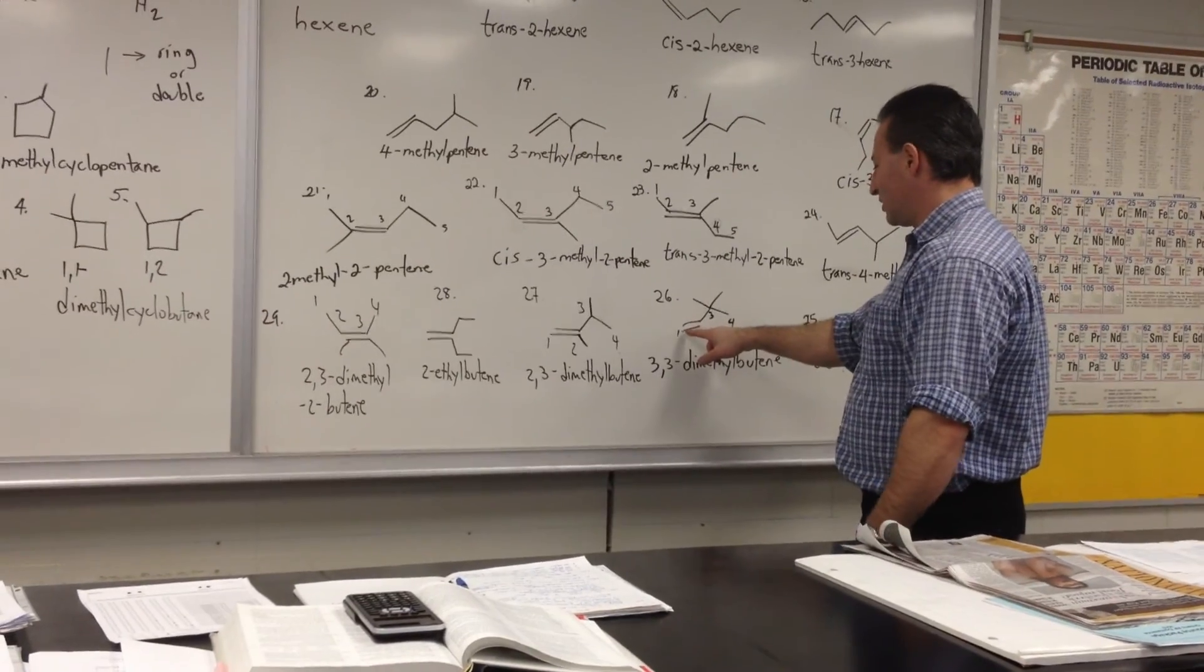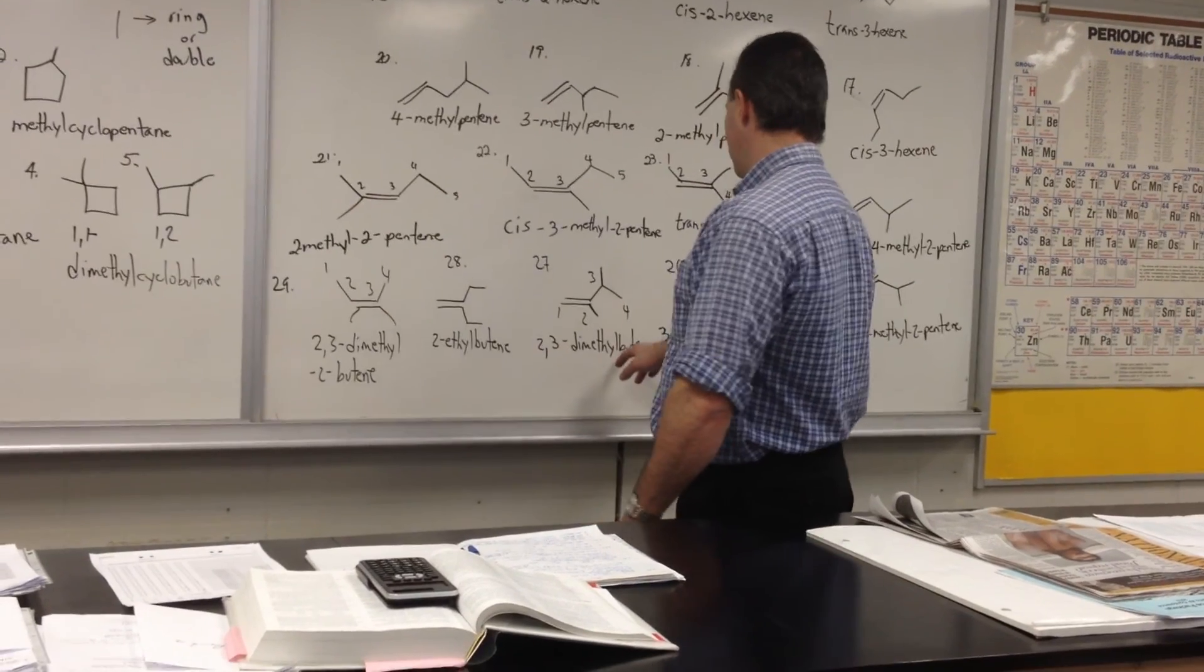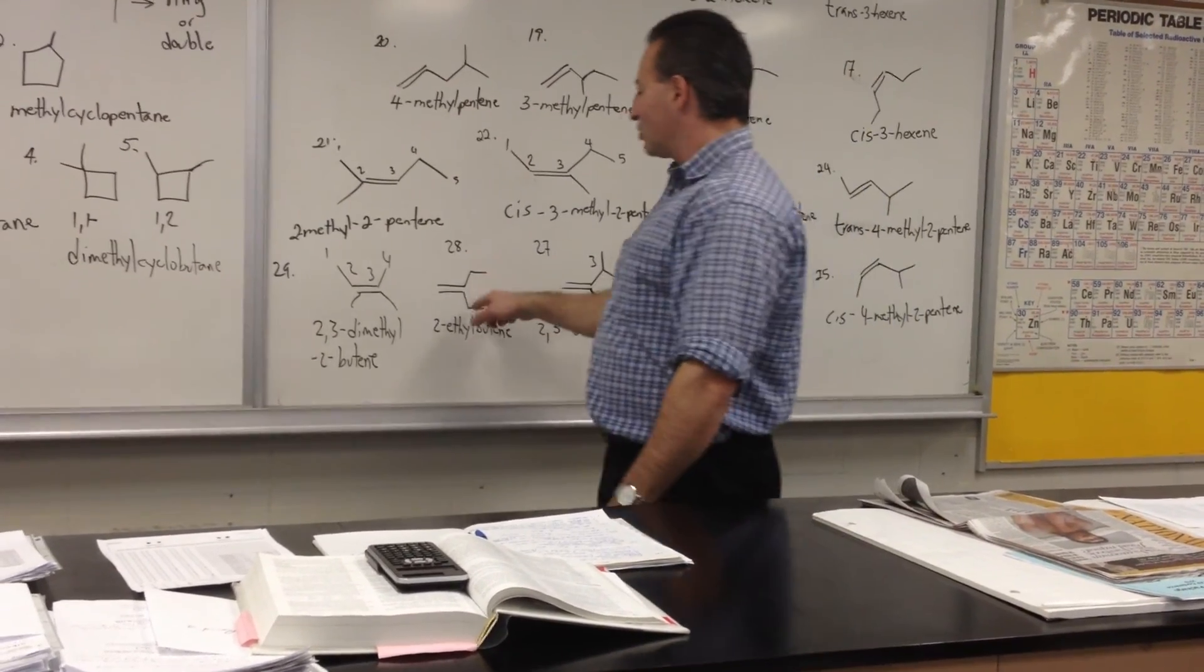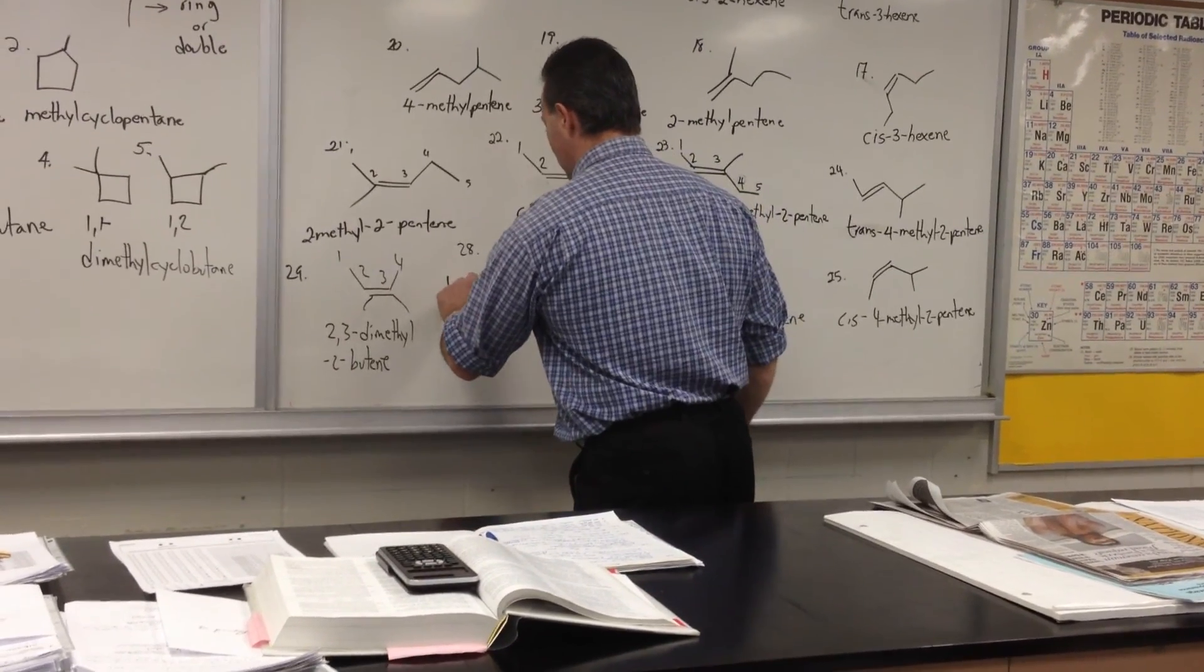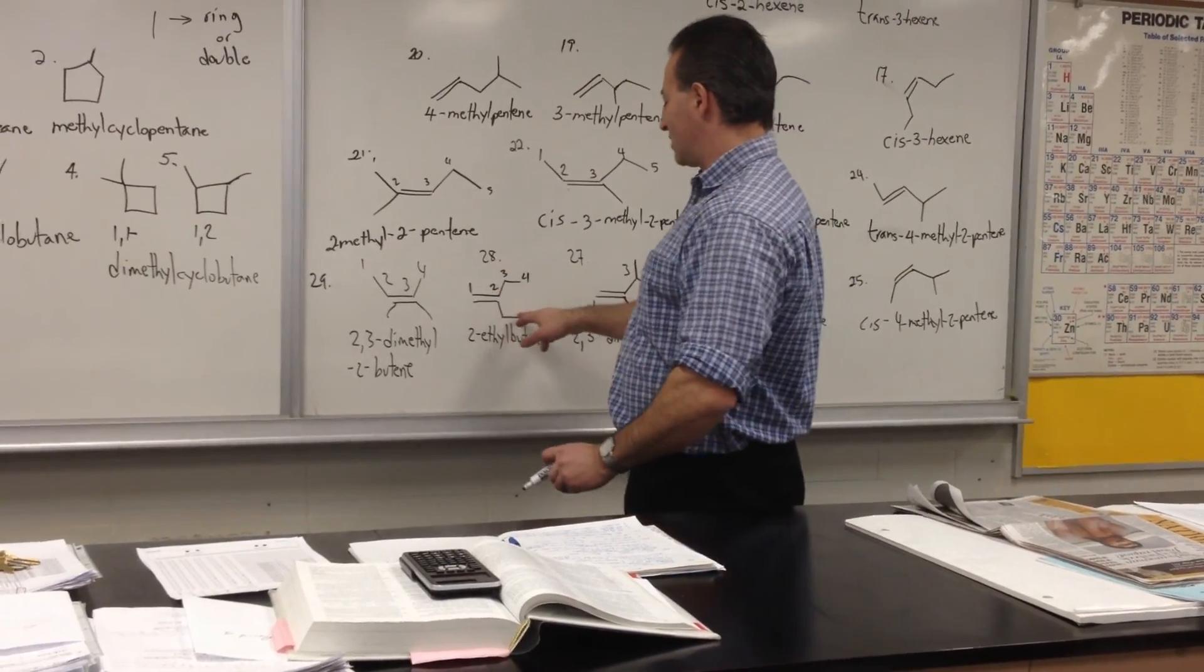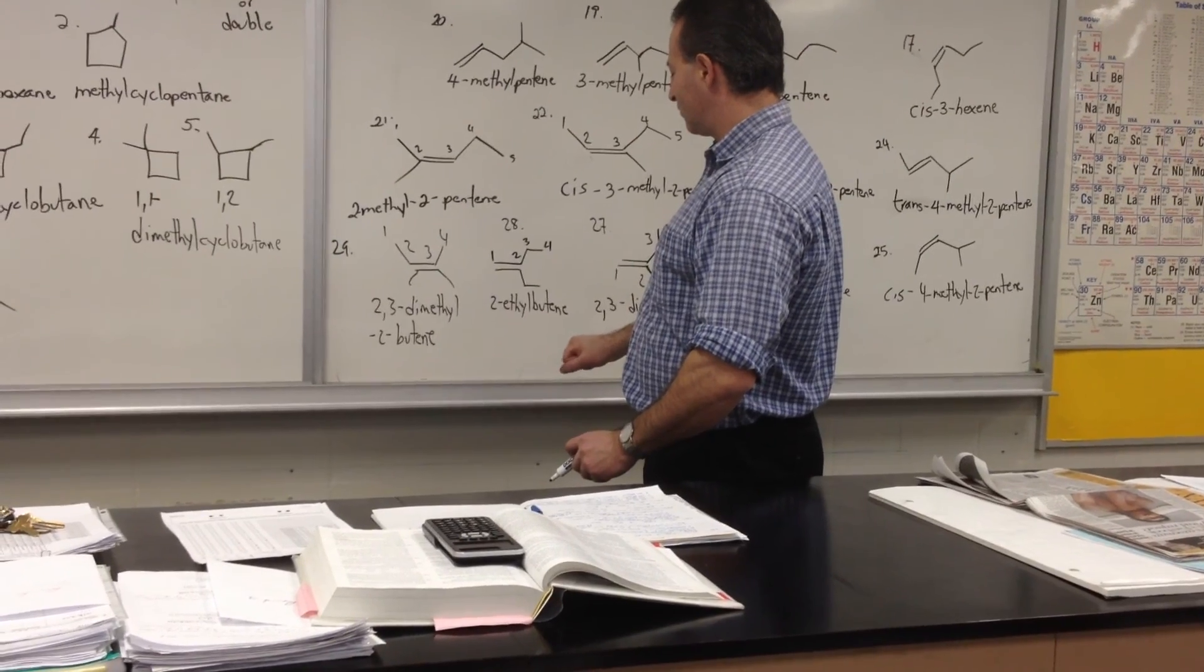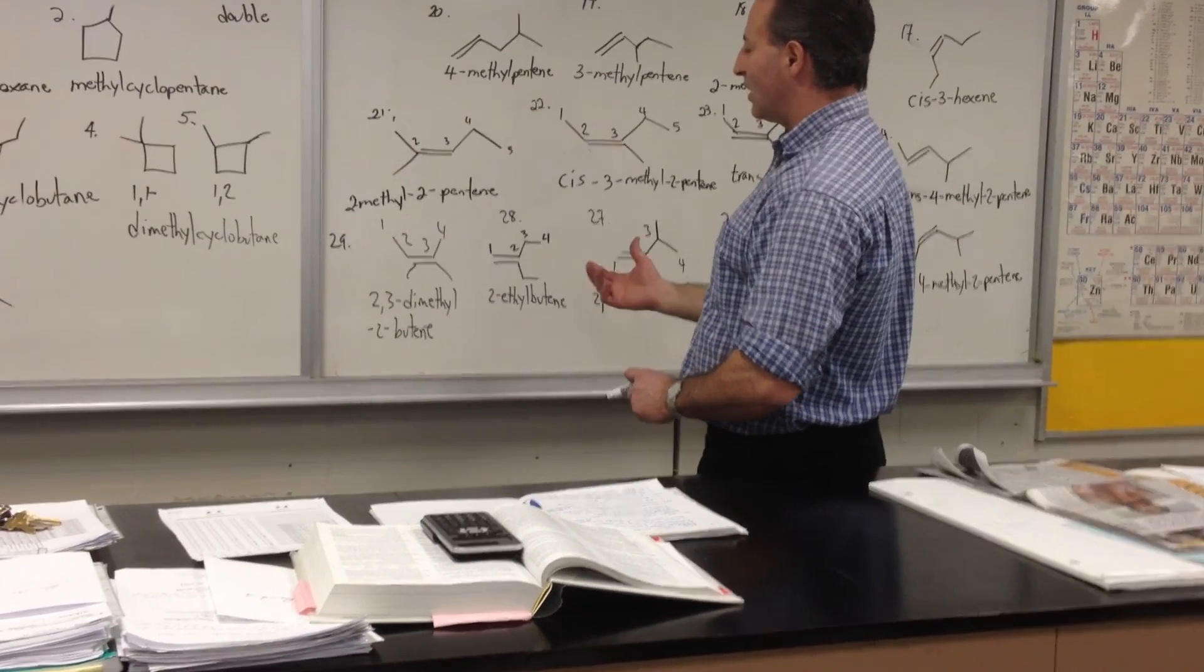No number because the butene of the double bond is at the first position. You can also have 2,3-dimethyl-1-butene. So you take that methyl group and put it here. We can also have an ethyl group at the second position. We count from the side that's going to give us the lowest number for the double bond. So it's 2-ethyl-1-butene.